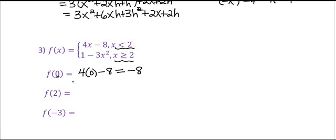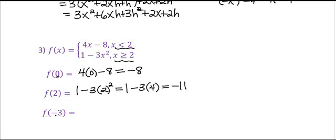What about f of 2? Be careful here — 2 is not less than itself, so the first rule does not apply. But 2 is greater than or equal to itself, so I would have to plug into the second rule. Following order of operations, I square my 2 first, so this would be 1 minus 3 times 4, or 1 minus 12, which is negative 11. And then f of negative 3: negative 3 satisfies the first part because it is less than 2. So I would have 4 times negative 3 minus 8, which is negative 12 minus 8, which would be negative 20.